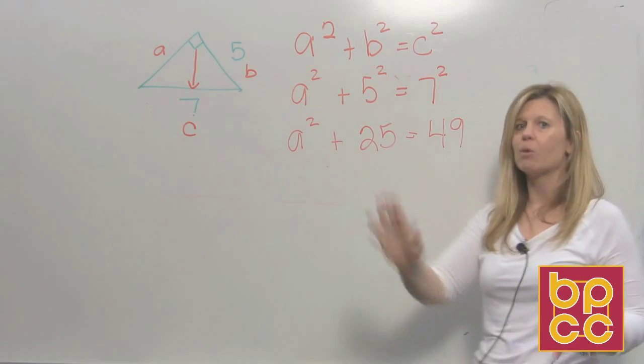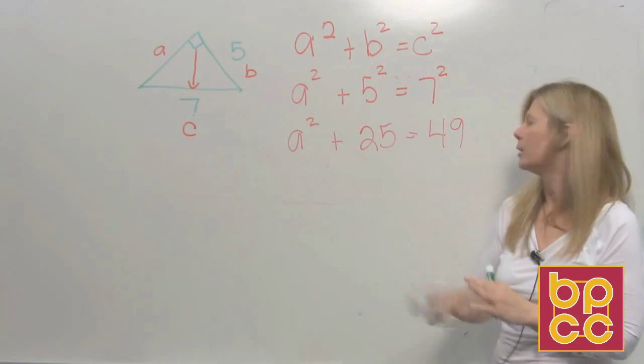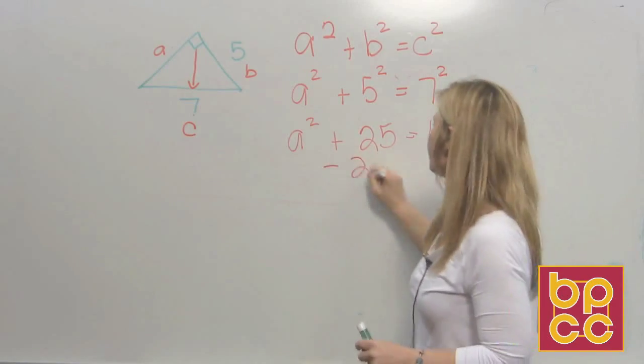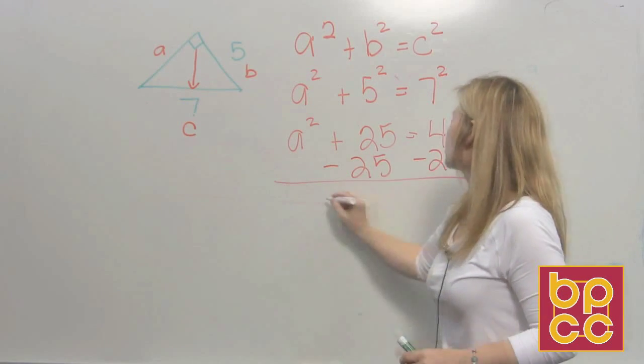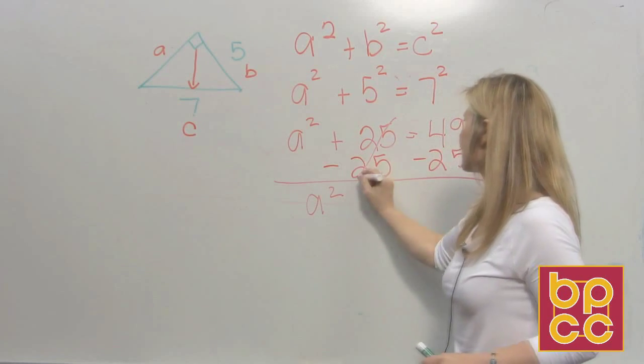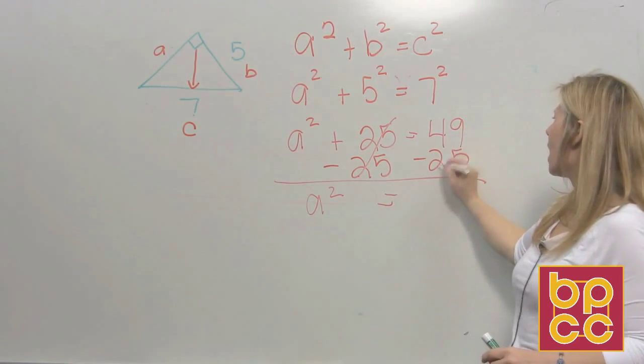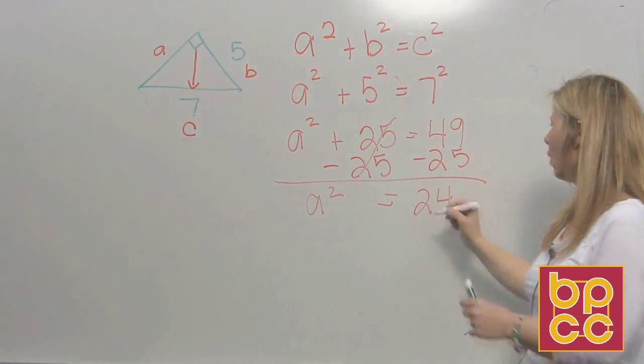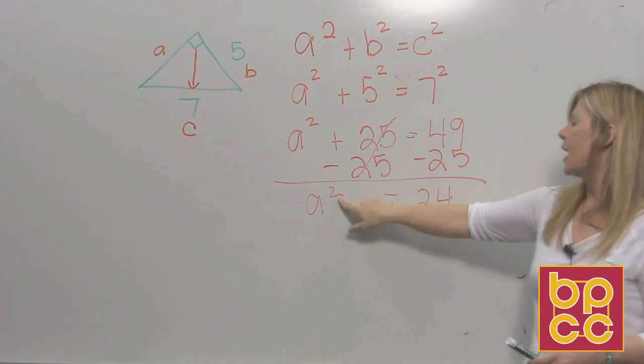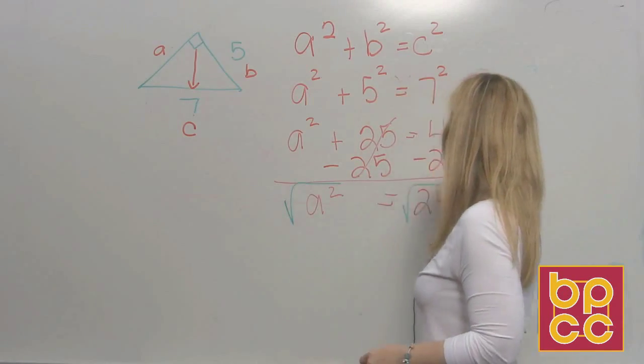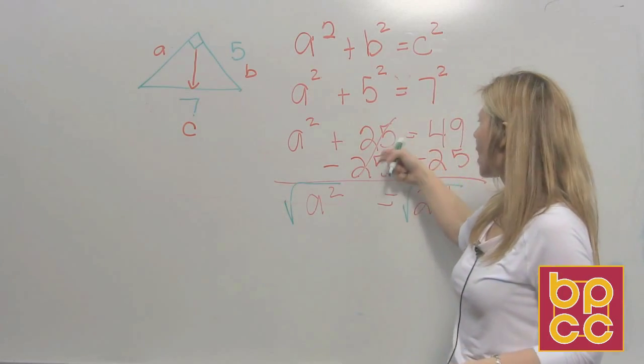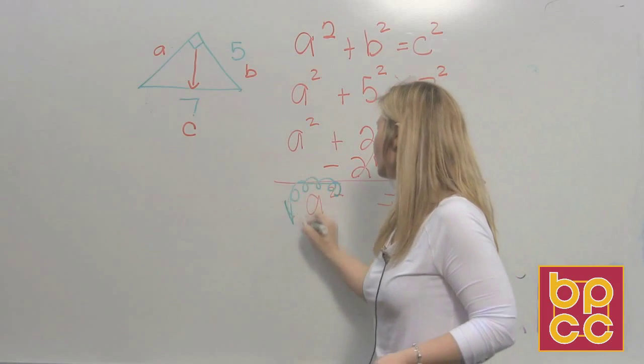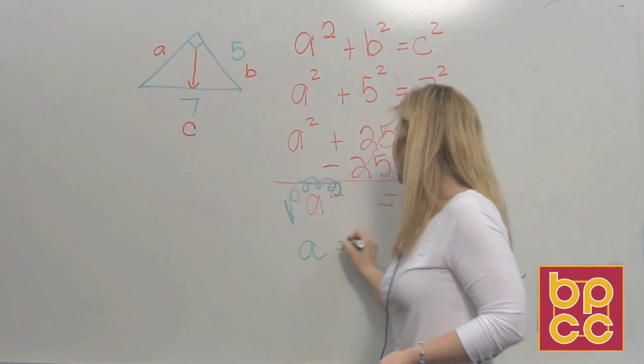So to square root, we said we got to move everything to the right we can. We can move the 25. So we get A squared. This cancels as opposites. 49 minus 25 is 24. Good. The opposite of squaring is square rooting. Squares and square roots are opposites, just like add and subtract are opposites. So they cancel out. There's the A. Equals.